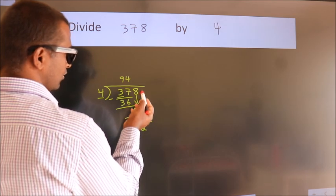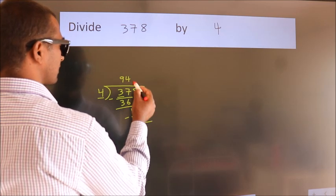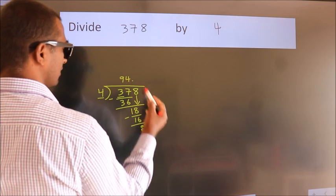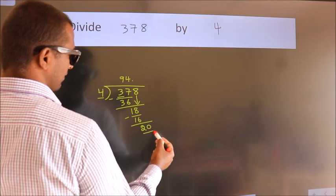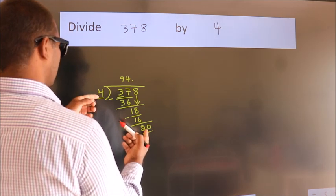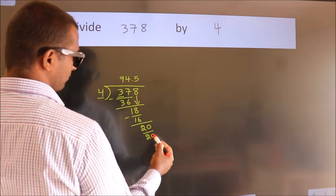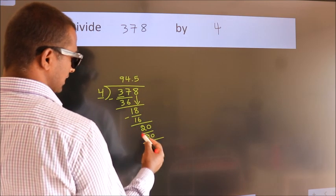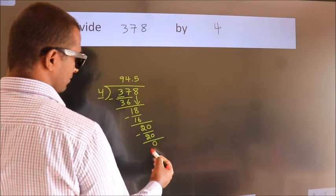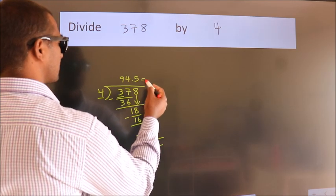After this, there are no more numbers to bring down. So what we do is put a dot and take 0, giving us 20. When do we get 20 in the 4 table? 4 times 5 equals 20. Now we subtract and get 0. We got remainder 0, so this is our quotient.